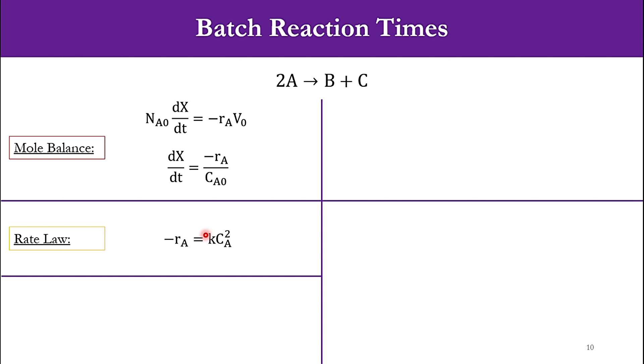Then going to the stoichiometry. Since we said that V equals V0, there is no epsilon, no pressure term, no temperature term. If you remember our previous lecture on stoichiometry, accordingly CA will equal CA0 times (1-X). Now once we've done step 1 (mole balance), rate law, and stoichiometry, the fourth step is to combine these three.